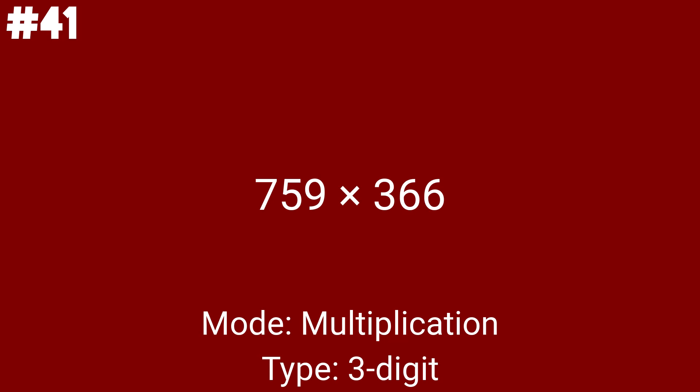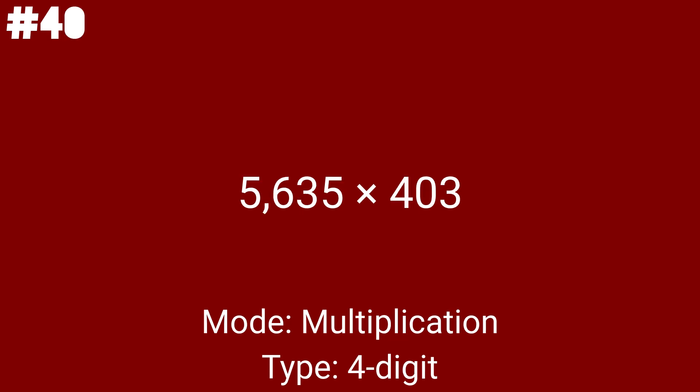Let's move on to quadruple digits. This one is 5635 times 403, the first 4-digit multiplication problem and the first of the second half of the multiplication problems. The 17th problem is 3694 times 559. This is the 14th to last multiplication problem. After the multiplication problems, we move on to division.